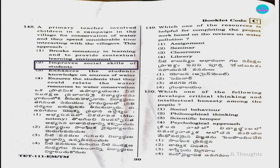Question number 149: Which resource is helpful for completing project work based on reviews on water pollution? Options: assignment, seminar, classroom, or library. The answer is option four, library, as library resources are most helpful for research-based project work.